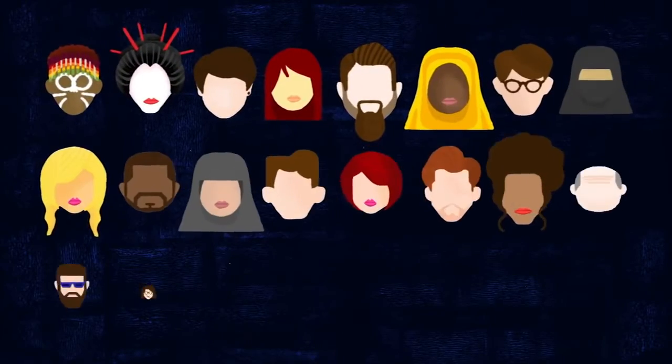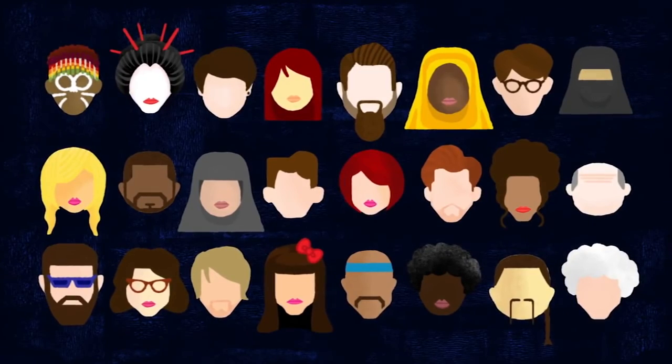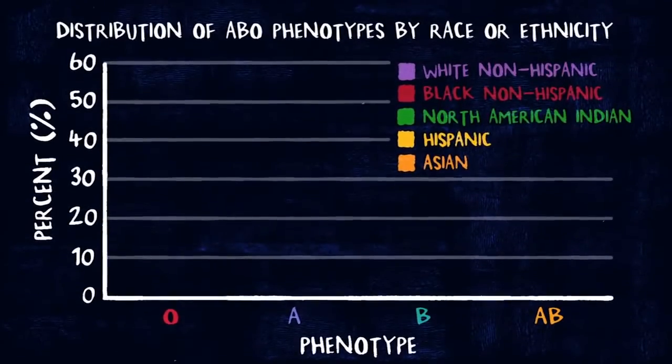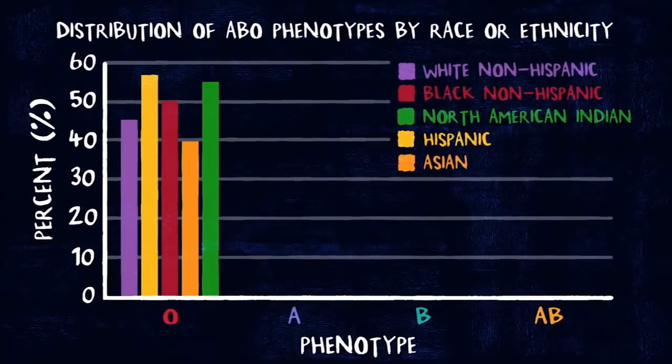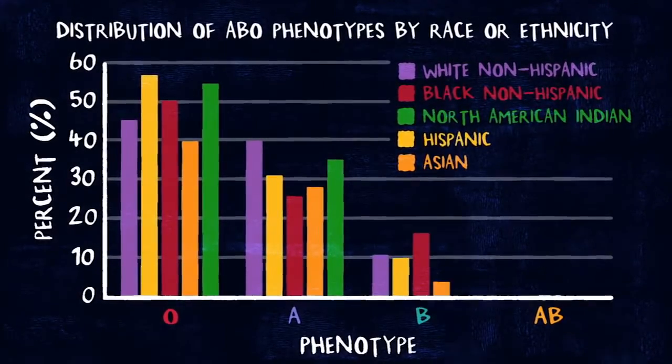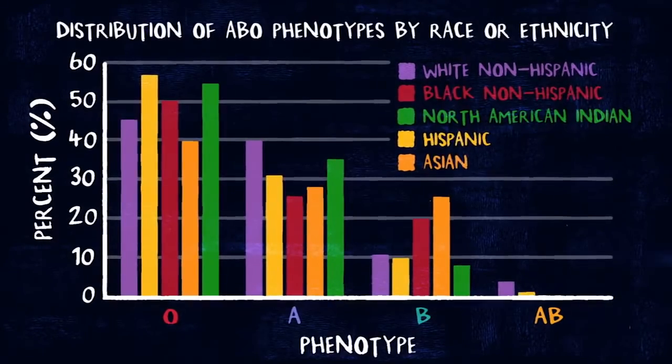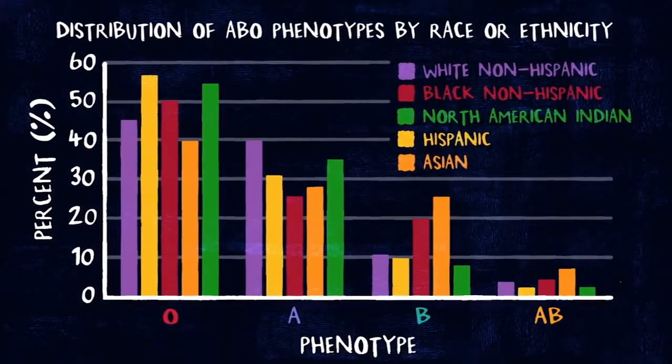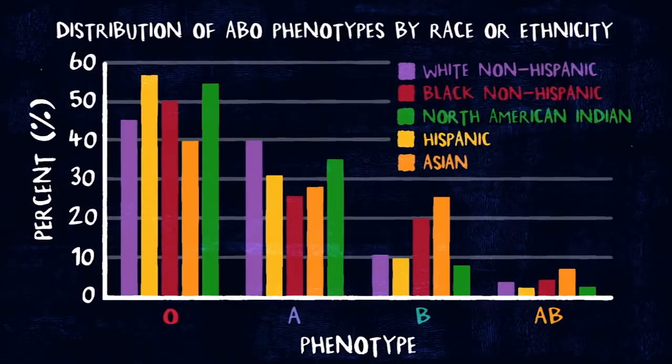Some cultures believe blood type to be associated with personality, though this is not supported by science. And though the proportions of different blood types vary between human populations, scientists aren't sure why they evolved, perhaps as protection against bloodborne diseases, or due to random genetic drift.